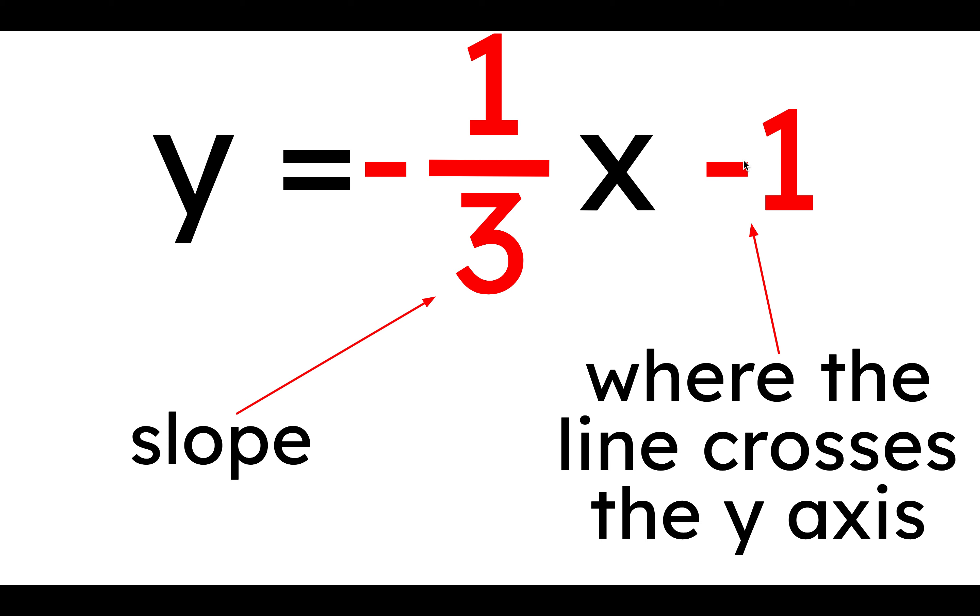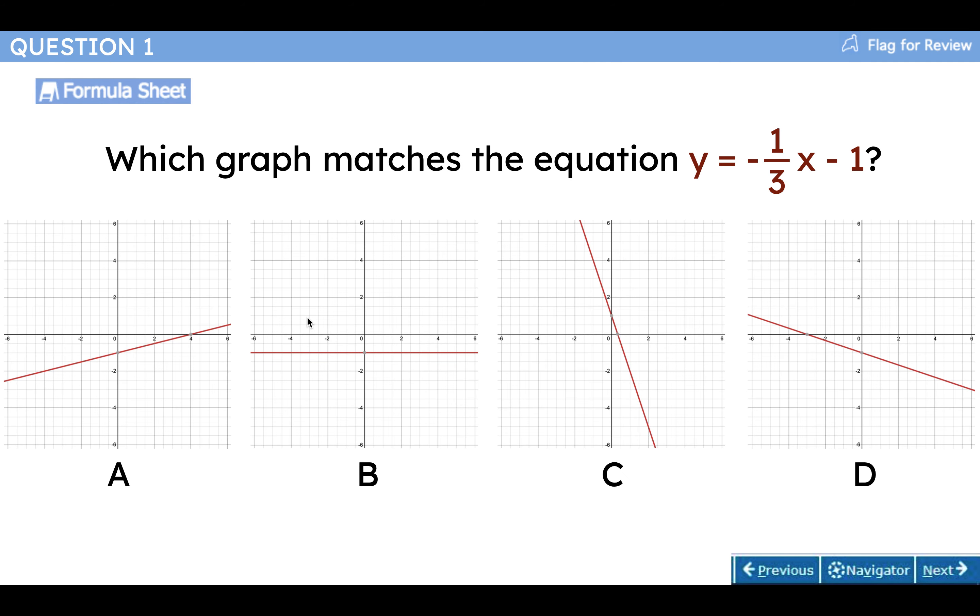We should be able to see if the lines cross at negative one pretty simply. Let's take a look. Does a cross at negative one? I know, I apologize for how small it is. I couldn't figure out how to fit these all on the screen otherwise. But this is zero, and this is negative two. This is halfway between. So it is, boop, negative one.